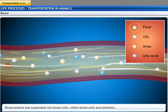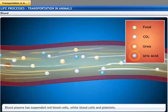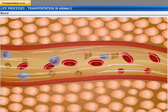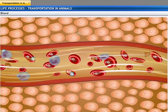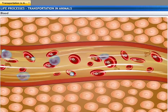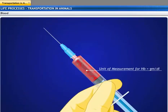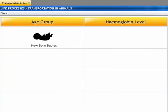Plasma transports food, carbon dioxide, and nitrogenous wastes in dissolved form throughout the body. Oxygen is delivered to the tissues by a pigment called hemoglobin, which is present in red blood cells. The unit of measurement for hemoglobin is gram per deciliter of whole blood. In newborn babies, 17 to 22 gram per deciliter of hemoglobin is present.